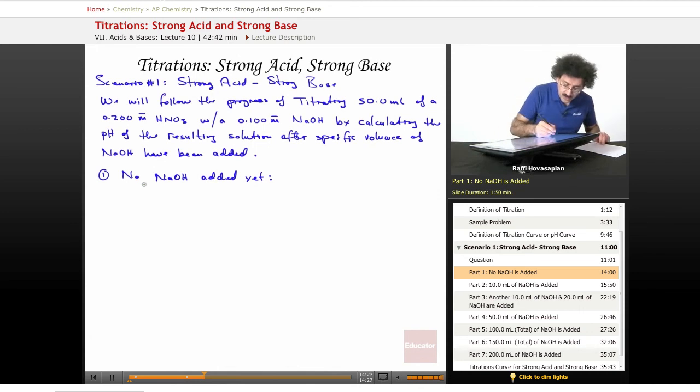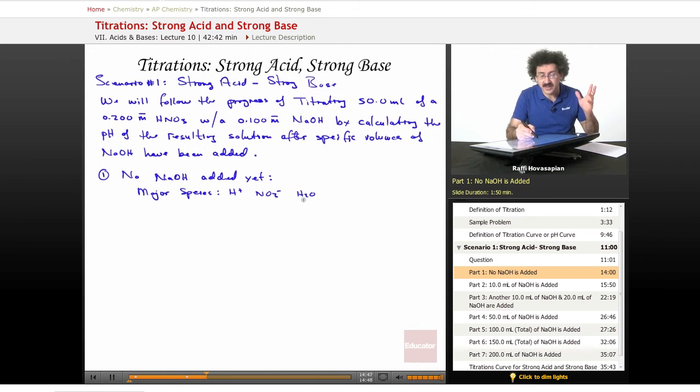So we do what we always do. Let's check what our major species are in solution. Well, our major species are H+, because it is a strong acid, fully dissociated. It is the nitrate ion, and it is the H2O. That's it. Strong acid, water, weak acid, the Ka is 1 times 10 to the negative 14.